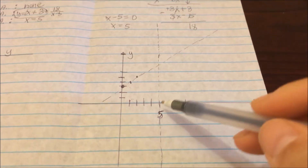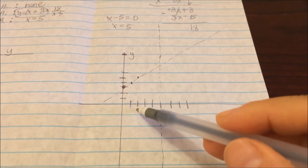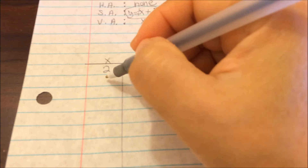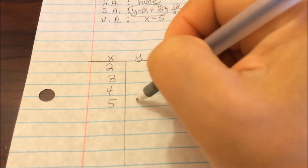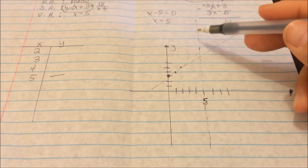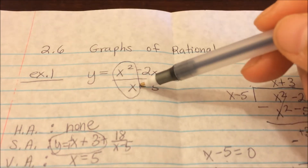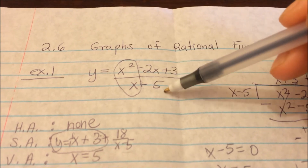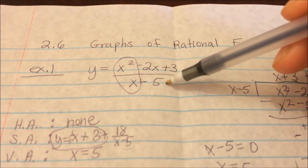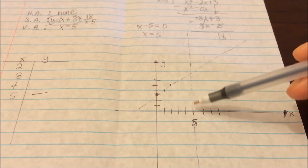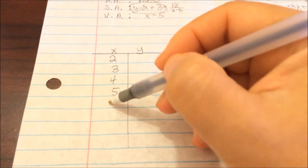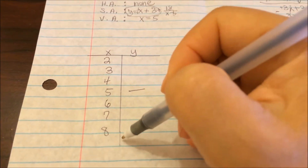Since 5 is the middle, going 3 to the left lands at about x equals 2. So I start the table at x equals 2, then 3, 4, and then 5 is blank because that's the asymptote — obviously there won't be a number there. Then 3 more after 5: x equals 6, 7, and 8.